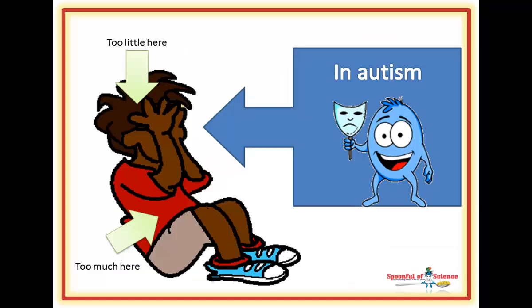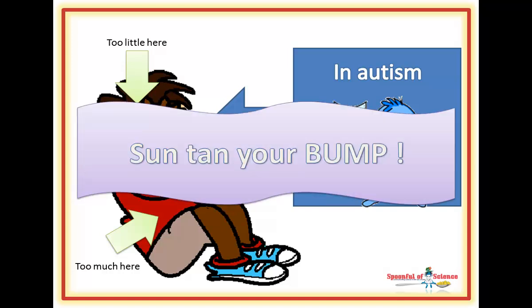Serotonin metabolism is wonky in autism. This research confirms vitamin D is something that matters during pregnancy. Make sure your baby's brain has everything it needs to wire up the socializing system. Go suntan your bum.